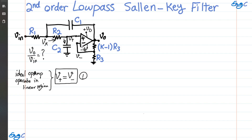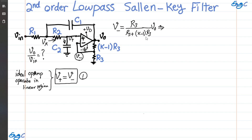Because no current flows through the input terminals of the op-amp — since we are assuming each input terminal has infinite impedance — the relationship between the voltage at the negative terminal and Vout is a simple voltage division between the two resistors. So V at the negative input terminal is R3 divided by R3 plus (K minus 1)R3, times Vout. This simplifies to Vout over K. Using equation one, V-negative equals V-positive equals Vout over K.